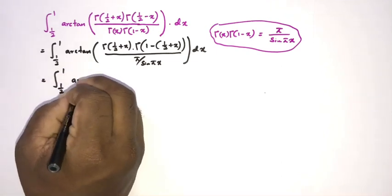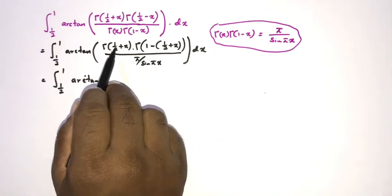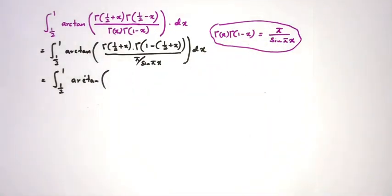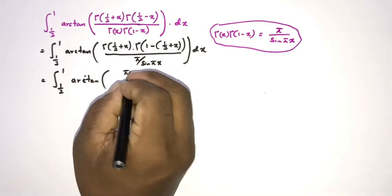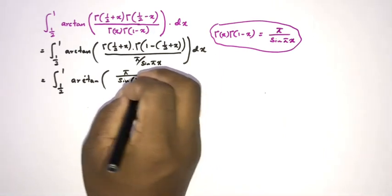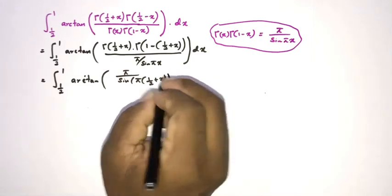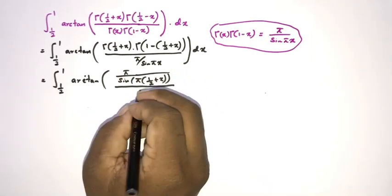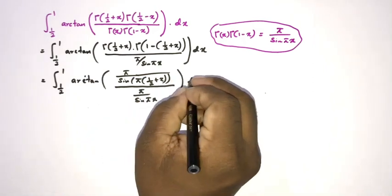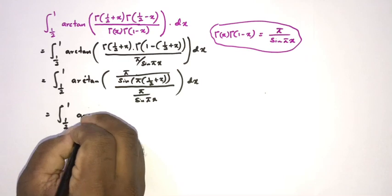Now in the numerator we have gamma(1/2 + x) · gamma(1 - (1/2 + x)), so applying Euler's reflection formula gives π / sin(π(1/2 + x)). The denominator becomes π / sin(πx). So our integral is the integral from 1/2 to 1 of arctan of [π / sin(π(1/2 + x))] divided by [π / sin(πx)], dx.